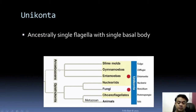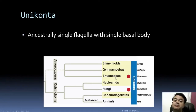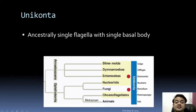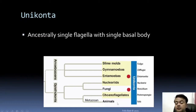Inside Amoebozoa, we find amoebae and related organisms, slime molds like Fuligo, gymnamoeba with examples like Dictyostelium, and Entamoeba — a potential animal pathogen that can cause dysentery, specifically Entamoeba histolytica. Coming to Opisthokonta: nucleariids with Nuclearia as an example, fungi with Penicillium as an example, choanoflagellates with Proterospongia as an example, and animals including humans. Choanoflagellates and animals form one clade; fungi and nucleariids form another — together all are called Opisthokonta.